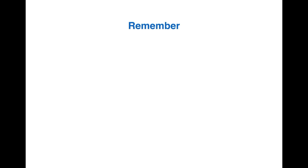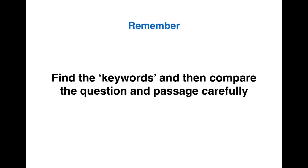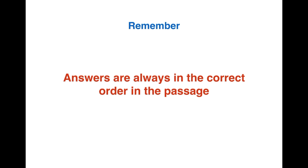Two more quick things to remember. First, our main technique: find the keywords and then compare the question and passage carefully — that's how we found all the answers in the examples. Second, and I haven't mentioned this before: answers are always in the correct order in the passage for this type of question. If you have a True/False/Not-Given or Yes/No/Not-Given section, the answers come in order in the passage, so you don't have to go back to the beginning for each question.